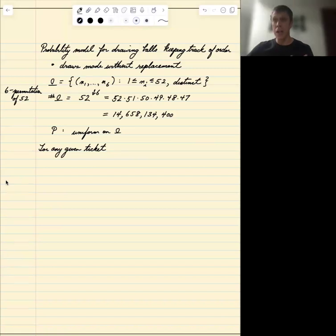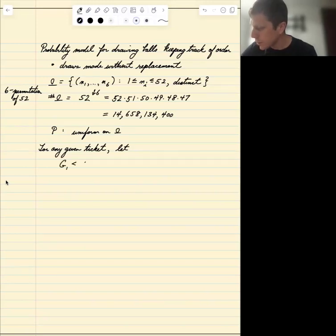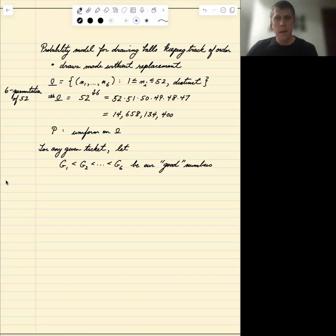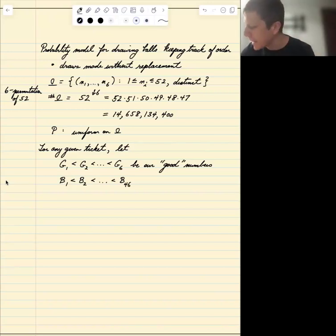So for any given ticket, there are six numbers. Let's let G1, G2 through G6 represent the good numbers. These are the numbers that we picked on our ticket. All the other numbers are bad numbers, and we're going to call them B for bad, B1, B2 up to B46. We're going to order them from smallest to greatest, that's just a convention for definiteness. These are the bad numbers.